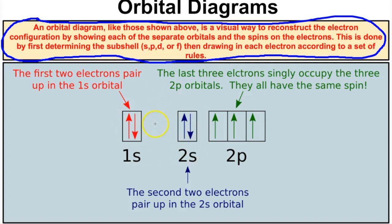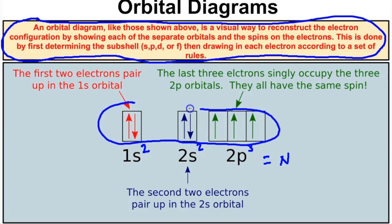If we take a look here, we have an atom that appears to have seven electrons. The first two electrons go in the 1s orbital, two are in the 2s orbital, and three electrons are in the 2p orbital. This is the electron configuration for nitrogen — we can tell because it has a total of seven electrons. The electron configuration is 1s2 2s2 2p3, and today we're going to learn how to draw these orbital diagrams as a visual representation of that.